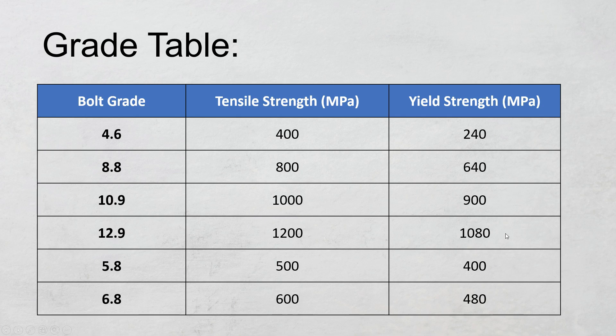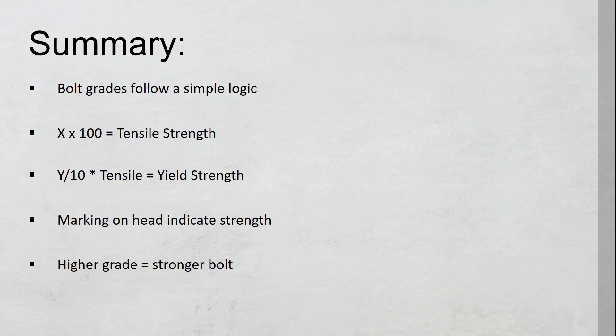To summarize this, use the X.Y format: X will basically give you the tensile strength and Y will give you the yield strength. Always check the head markings before searching for a bolt.